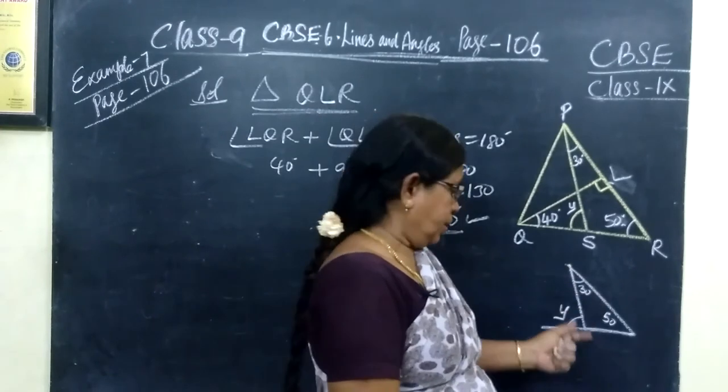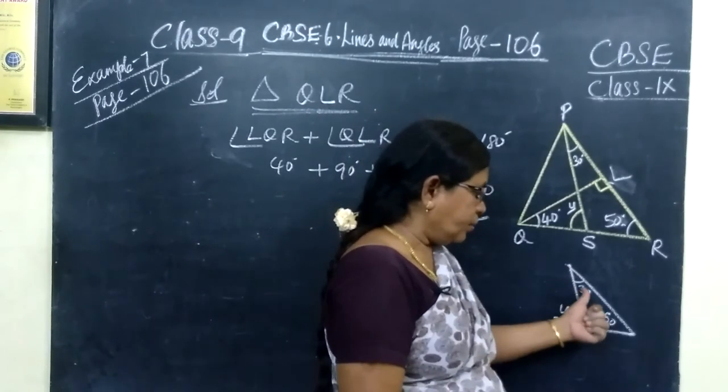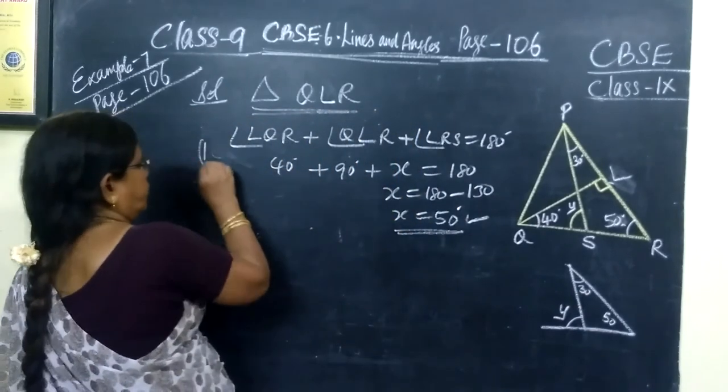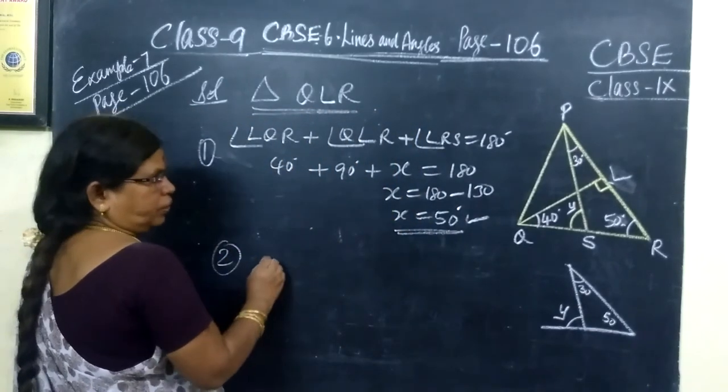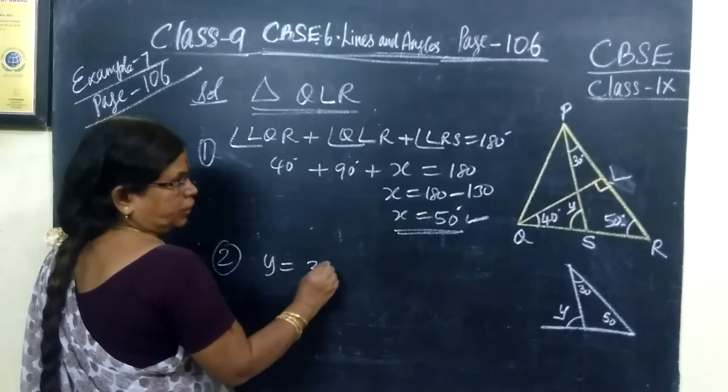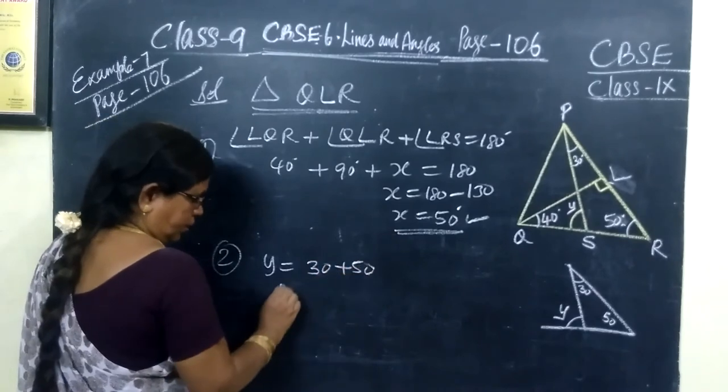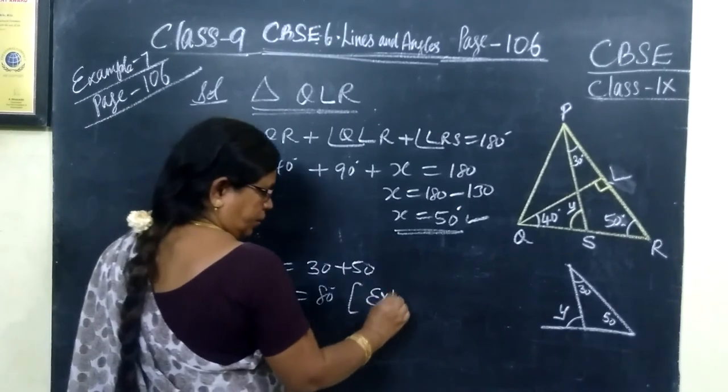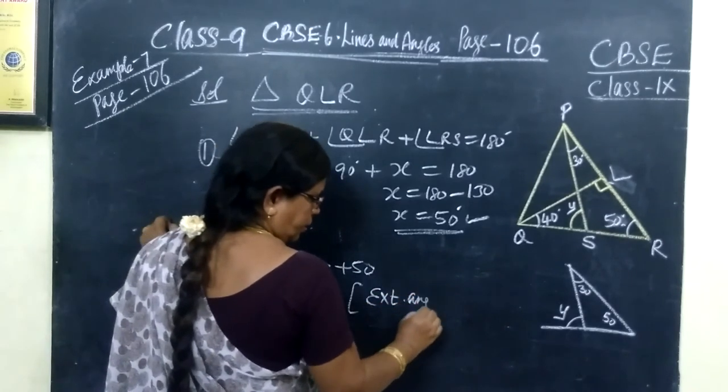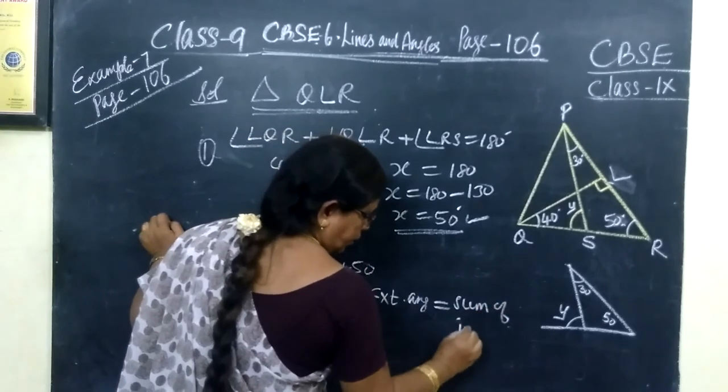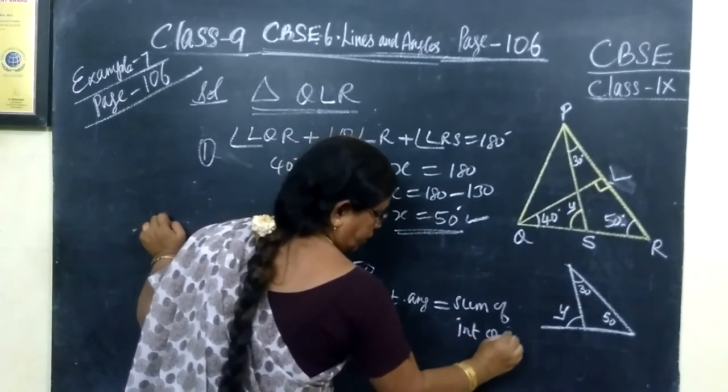The exterior angle equals the sum of the interior opposite angles. So y equals 30 plus 50, which equals 80 degrees, since the exterior angle equals the sum of the interior opposite angles.